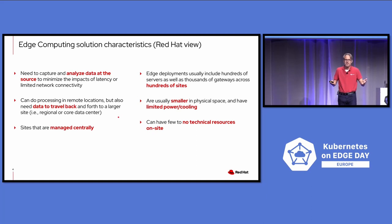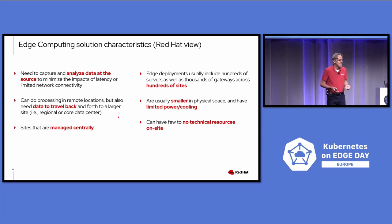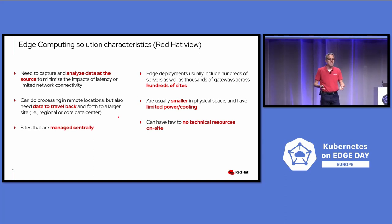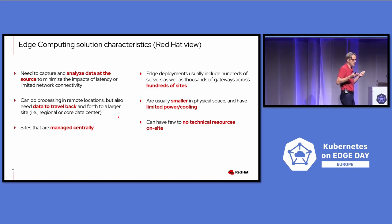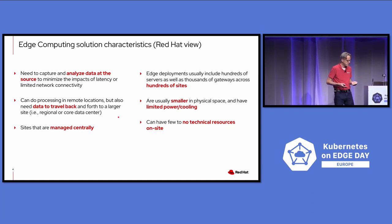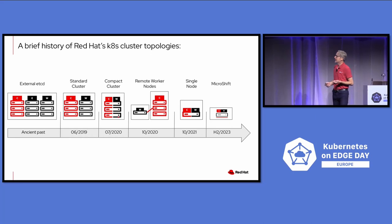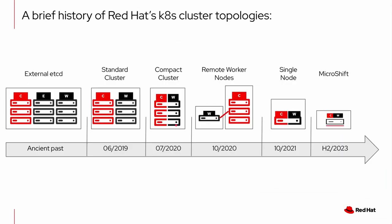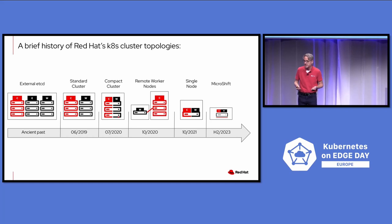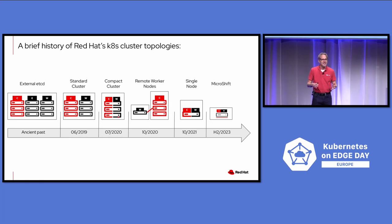That brings us to Kubernetes — one of the primary cloud technologies of the last eight years. We want to use Kubernetes at edge locations. To illustrate what I mean, let's look at the brief history of Red Hat's Kubernetes distribution — the upstream community project OKD, and the enterprise product OpenShift — and the trajectory of how we reduced its footprint over time.